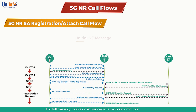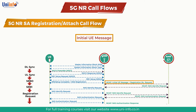Next is the Initial UE Message. The gNodeB sends the Initial UE Message to the selected AMF. The message carries the Registration Request message received from the UE in the RRC Setup Complete message. The RAN UE NGAP ID and the RRC Establishment Cause are also included in the message.